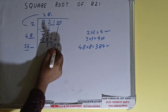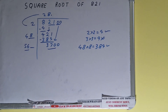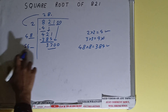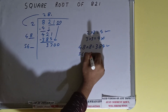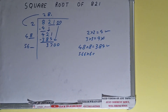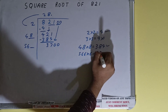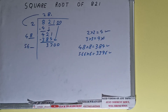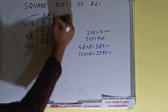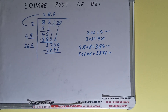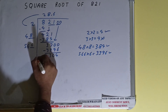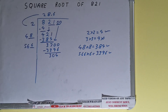The number will become 3700. Now we can compare this 56 with this 370. 56 times 6 is 336, so we can try 6 times. So 566 into 6 we can try. It will be 3396, and that is good to use. So 6 here and 6 here, 3396. Subtract it and 304 will be left.